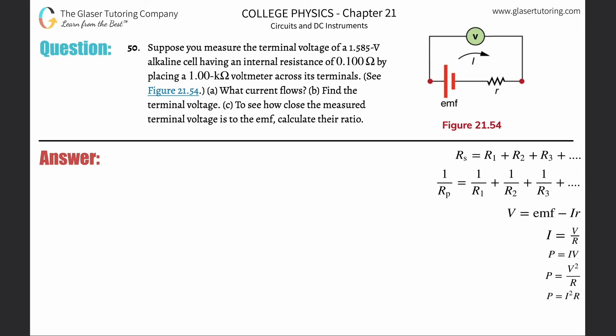Number 50: Suppose you measure the terminal voltage of a 1.585 volt alkaline cell having an internal resistance of 0.1 ohms by placing a one kilo-ohm voltmeter across its terminals. What current flows? Here's the circuit on the top. What we should do first is apply loop rule to this. Remember, the long bar represents the positive terminal, the short bar represents the negative, and let's assume the current flowing